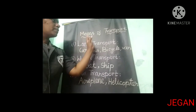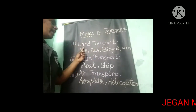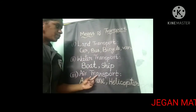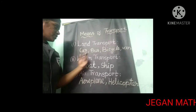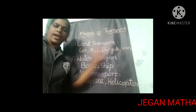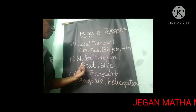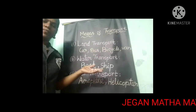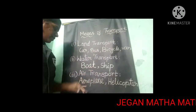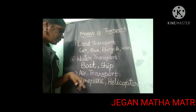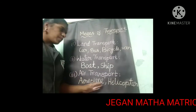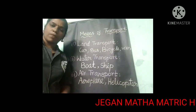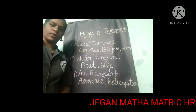There are three main means of transport: land transport, water transport, and air transport. The examples of land transport are car, bus, bicycle, and van. The examples of water transport are boat, ship, and steamer. The examples of air transport are aeroplane, helicopter, jet, and hot air balloon.